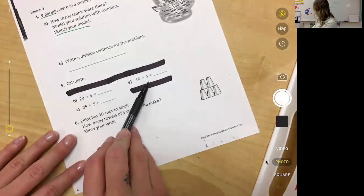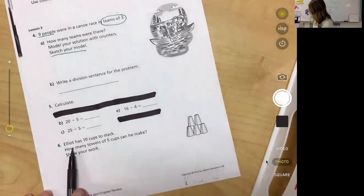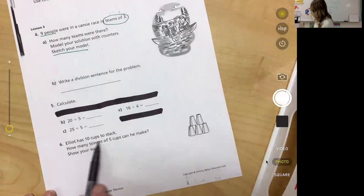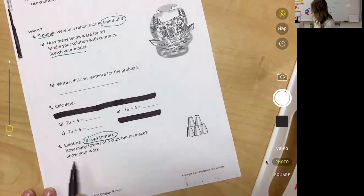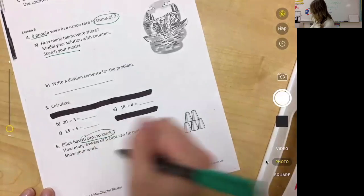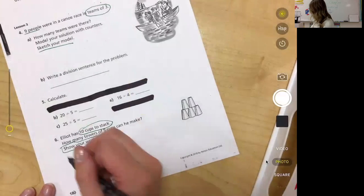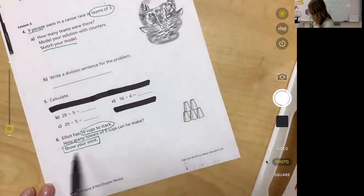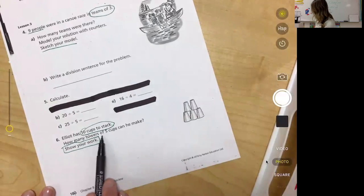Same with this one, same with this one. You can also draw pictures over here or on the back if that makes it easier for you. Last one, number six: Elliot has ten cups to stack. So he has ten total cups, that's our big altogether number. How many towers of five cups can he make? So again, you're going to draw your cups. You have to show your work, you guys. I don't want to just see an answer here. Show your work. Draw the ten cups, show your groups of five, how many groups of five.